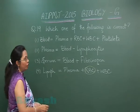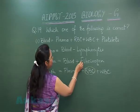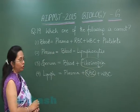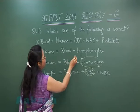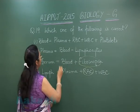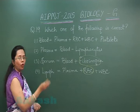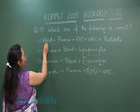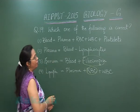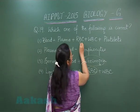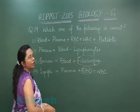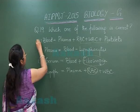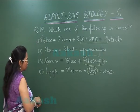Plasma is defined as blood minus the lymphocytes — but that is not correct; it is blood minus all the formed elements. And blood is plasma plus RBCs, WBCs, and platelets — these are the formed elements. So plasma plus the blood cells together would be the correct definition of blood. So the correct choice is option 1.